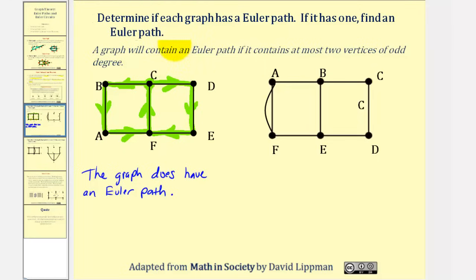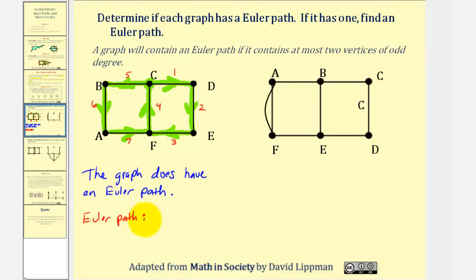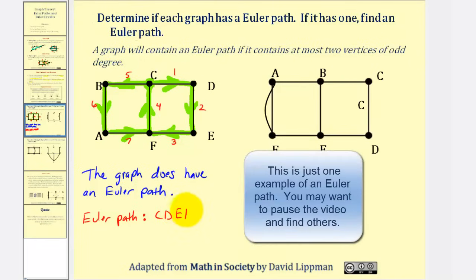Numbering the edges, we had one, two, three, four, five, six, and seven. So the Euler path is C, D, E, F, back to C, B, A, F.